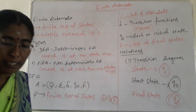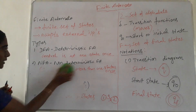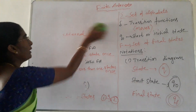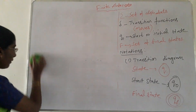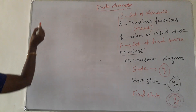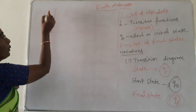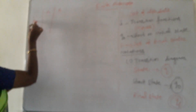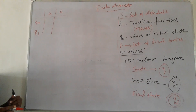The second notation is the transition table — the conventional tabular representation of the DFA. It consists of rows and columns. For example, if we have two input symbols A and B, and two states Q0 and Q1, this can be written in tabular form.